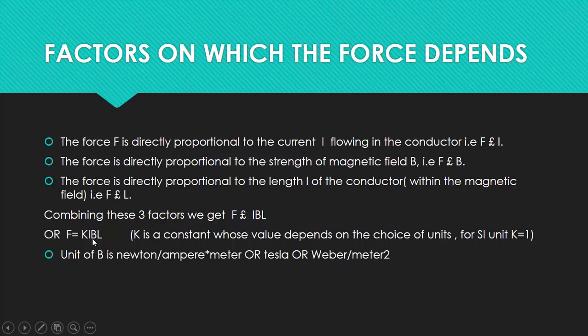So now B becomes what? F by I·L. F is measured in Newton, I (current) is measured in ampere, L is measured in meter. So the unit of B, or magnetic field, becomes Newton per ampere-meter, or Tesla, or Weber per meter squared.